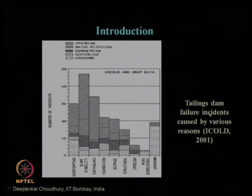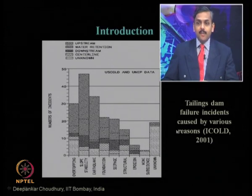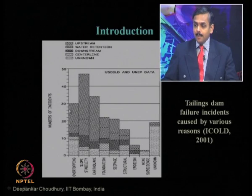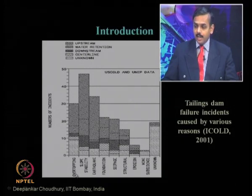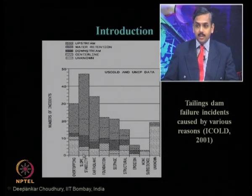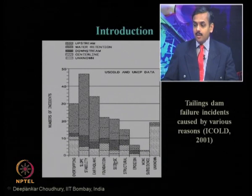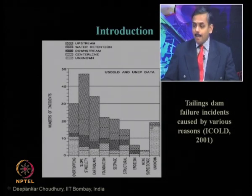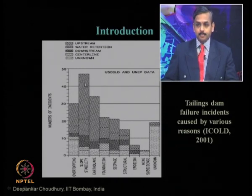This is the statistics of tailing dam failure incidents caused by various reasons. Earthquake is the second highest cause. Other causes include overtopping, slope stability failure (the highest reason), foundation problems, seepage, structural failure, erosion, mine subsidence, and unknown reasons. As per this 2001 publication, slope stability failure has the highest incidence, followed by earthquake.